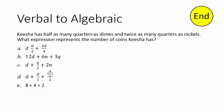Keisha has half as many quarters as dimes, and twice as many quarters as nickels. What expression represents the number of coins Keisha has? We don't know any of the actual numbers, so we're going to have to use variables. If I start with dimes and call dimes variable D, then I can get somewhere. It says I have half as many quarters as dimes, so quarters equal D divided by 2.